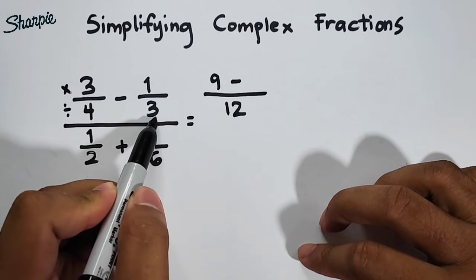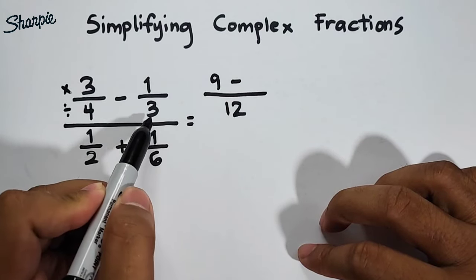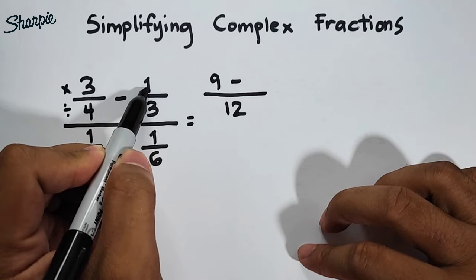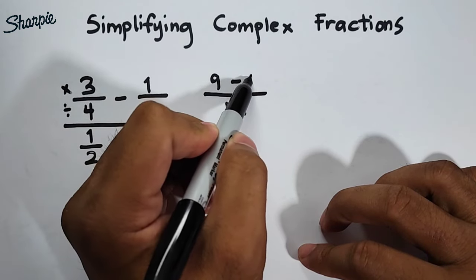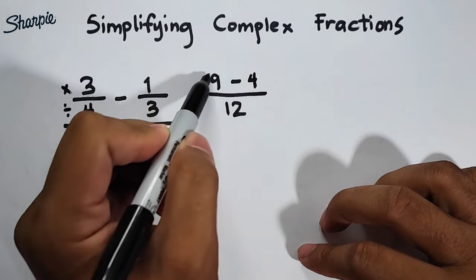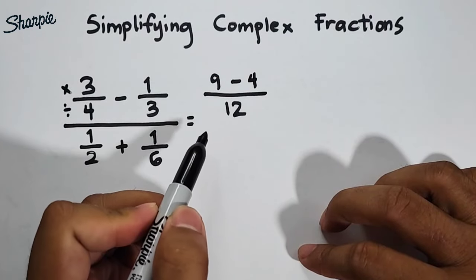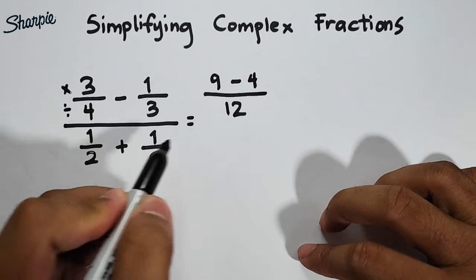Minus 12 divided by 3, that is equal to 4. So little by little, we're simplifying the numerator and denominator.